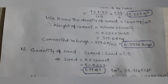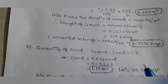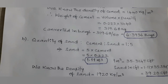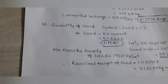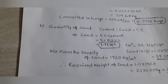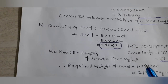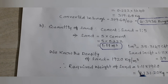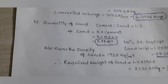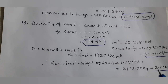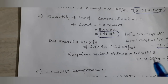We can convert sand to CFT. Since 1 cubic meter equals 35.314 CFT, sand in CFT equals 1.11 into 35.47 equals 39.20 CFT. We can also convert to kilograms. The density of sand is 1920 kg per cubic meter, so weight of sand equals volume into density: 1.11 into 1920 equals 2131.20 kg, which equals 2.13 metric tons.